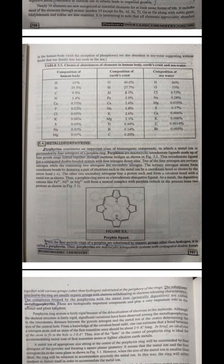As a result, dipositive cations like Fe2+, Ni2+, or Mg2+ will form a neutral complex with porphyrin, which in the process loses two protons as shown in figure 5.1. When the four pyrrole rings of a porphyrin are substituted by organic groups other than hydrogen, it is called a porphyrin.